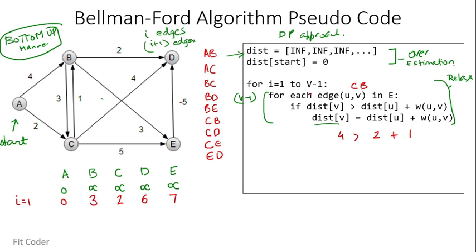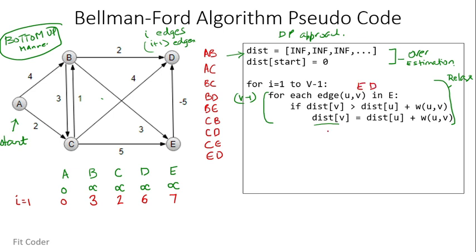For edge CD: distance of D is 6, not greater than distance of C (2) plus edge weight CD (4) = 6, so we skip. For edge CE: distance of E is 7, not greater than distance of C (2) plus edge weight (5) = 7, so we skip. For edge ED: distance of D is 6, which is greater than distance of E (7) plus edge weight ED (minus 5) = 2, so distance of D becomes 2. After the first round, the distances are: A=0, B=3, C=2, D=2, E=7.